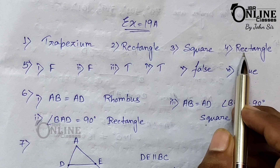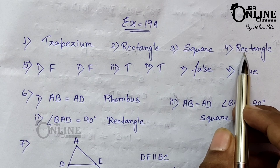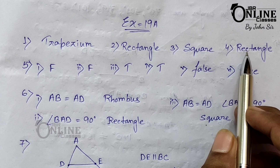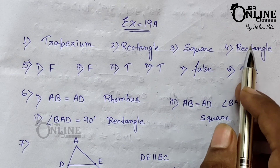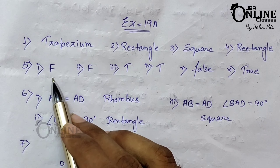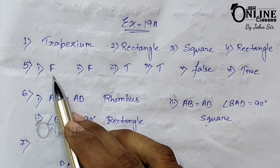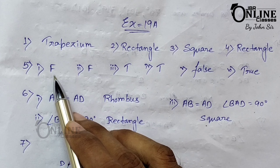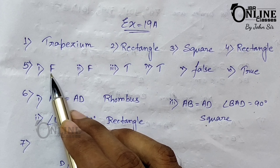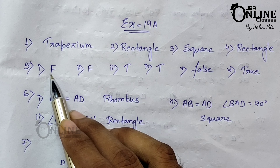Number four: what shape is a one rupee currency note? It's a rectangle. If it were a coin it would be a circle, but since it's a one rupee currency note, it's a rectangle.